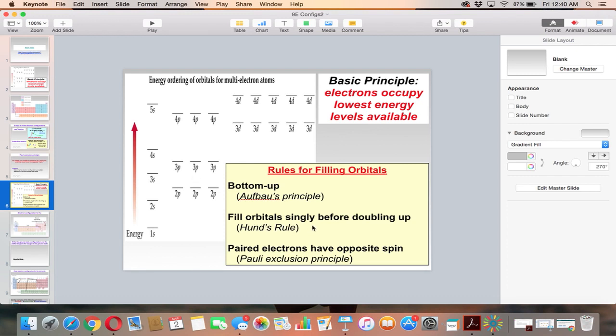Because Hund's rule says that if you're in a certain subshell, you're going to fill each orbital individually before you go back and pair them. You can't go up to the next level until they're paired, but you'll try and do individual first because electrons don't like each other. So they're going to go into their own orbital first if they can within a certain subshell. So within the P and the D, you do up, up, up, up, up, all the way across before you pair them.